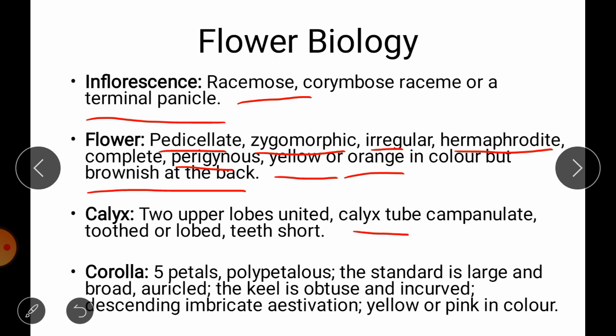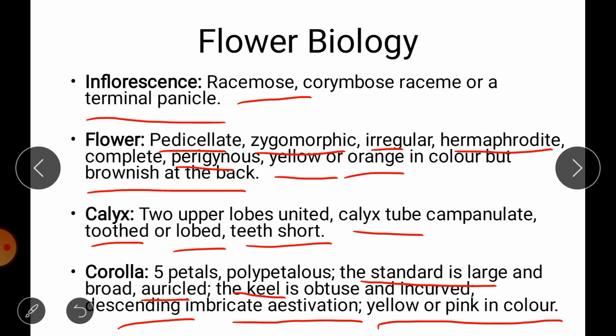The calyx tube has all lobes fused together forming a tube shape surrounding the corolla and other parts. Sometimes the teeth are short or lobed. The corolla has 5 petals, polypetalous — each petal is free from the others. The standard is large and broad with auricles, while the keel is obtuse and incurved. Descending imbricate aestivation — vexillary aestivation — is present. The colour of the corolla is sometimes yellow or pink.